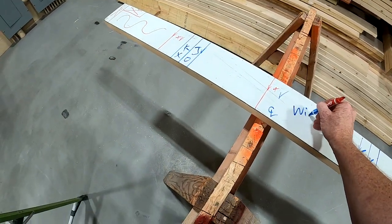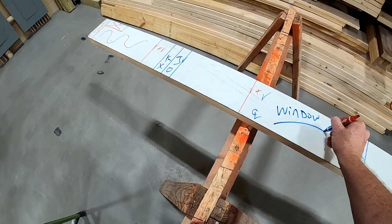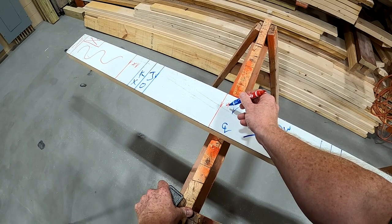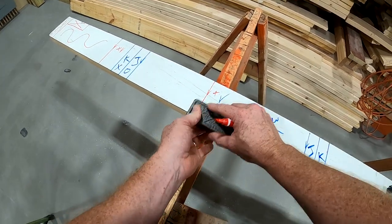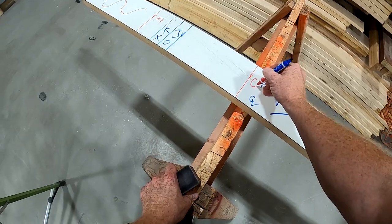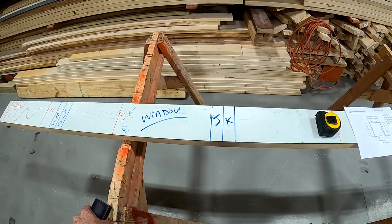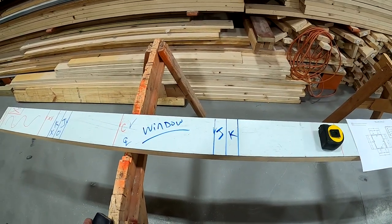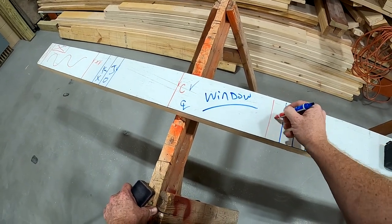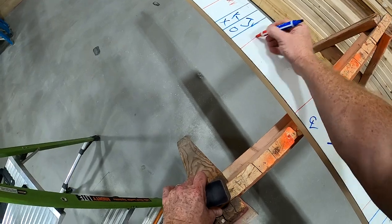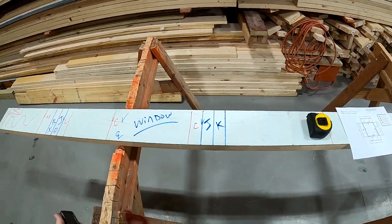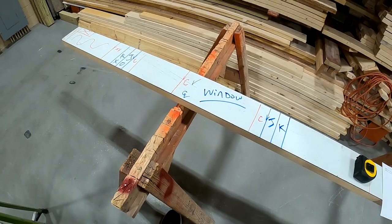Then I do the same on the other side — jack and king. Inside the window opening, the X is no longer a regular stud; it becomes a C for cripple. Depending on the width of the window, you might have another cripple here and another one on the other side — there can be different options depending on the size of the window.